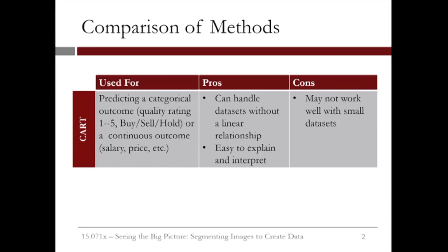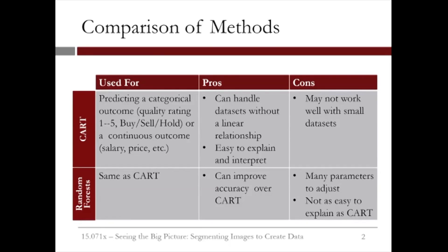The power of CART lies in the fact that it can handle nonlinear relationships between variables, and the tree representation makes it easy to visualize and interpret the results. The downside is that CART may not work very well on small datasets. Random forests is also used to predict categorical or continuous outcomes. Its benefit over CART is that it can improve prediction accuracy; however, we need to adjust many parameters and it's not as easy to explain as CART.